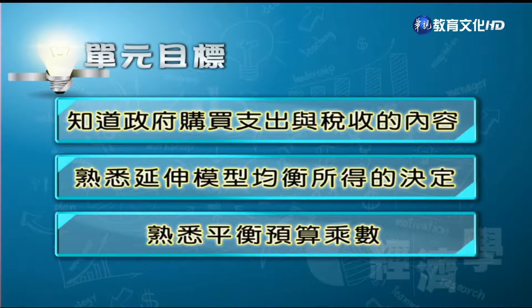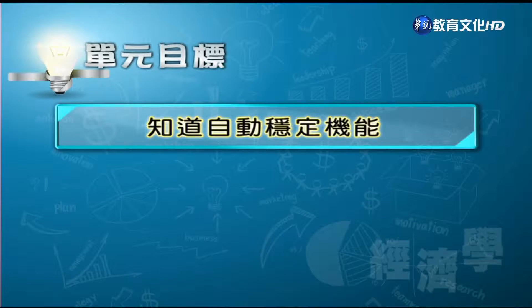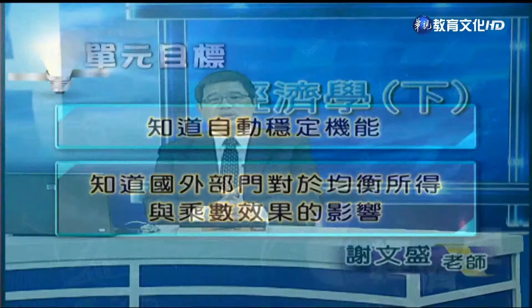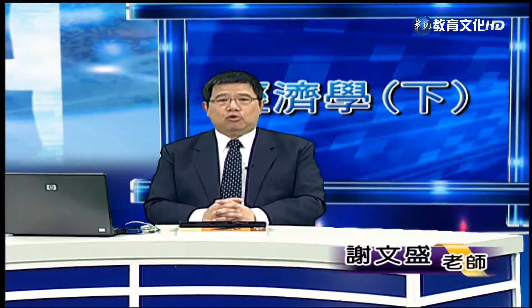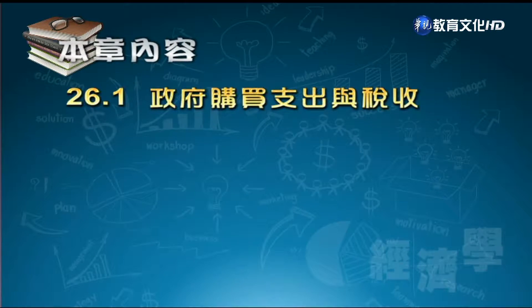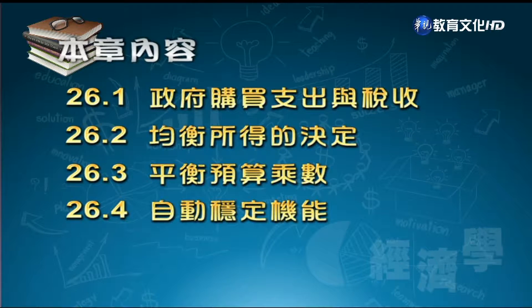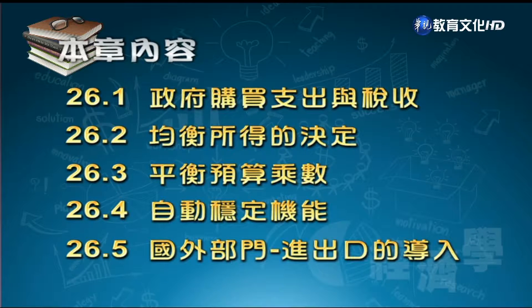首先我們要了解延伸模型包含了政府部門，因此需要了解政府的購買支出與稅收內容。第二，要了解延伸模型均衡所得是如何決定的。接下來要談平衡預算乘數、自動穩定機能，最後討論國外部門加入後對均衡所得的影響。